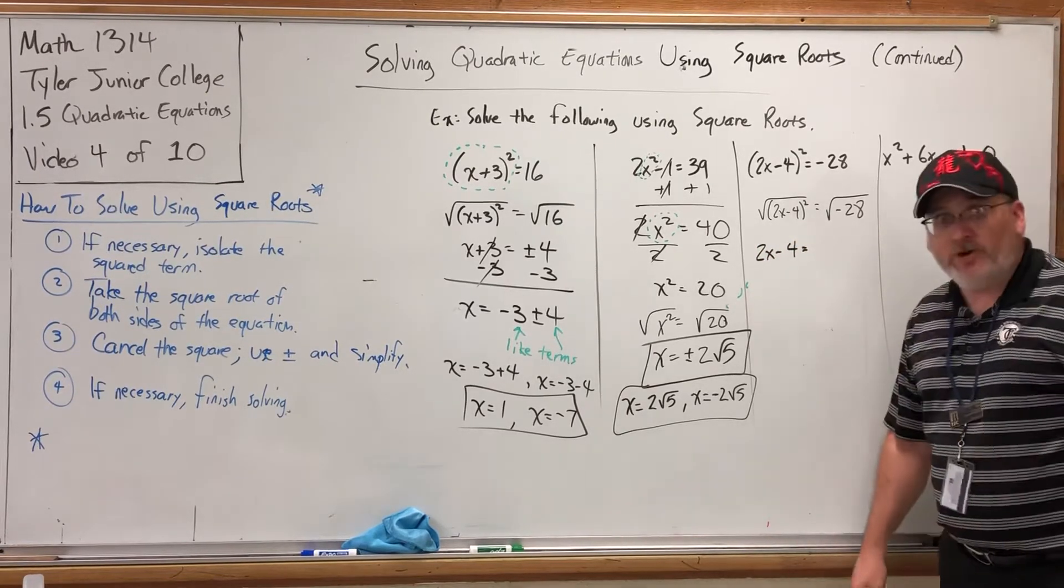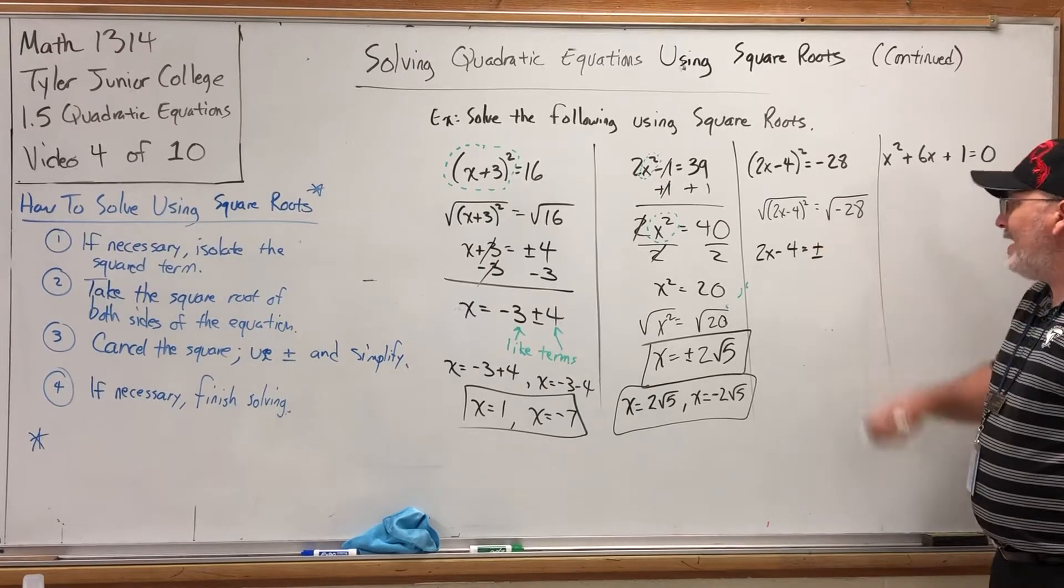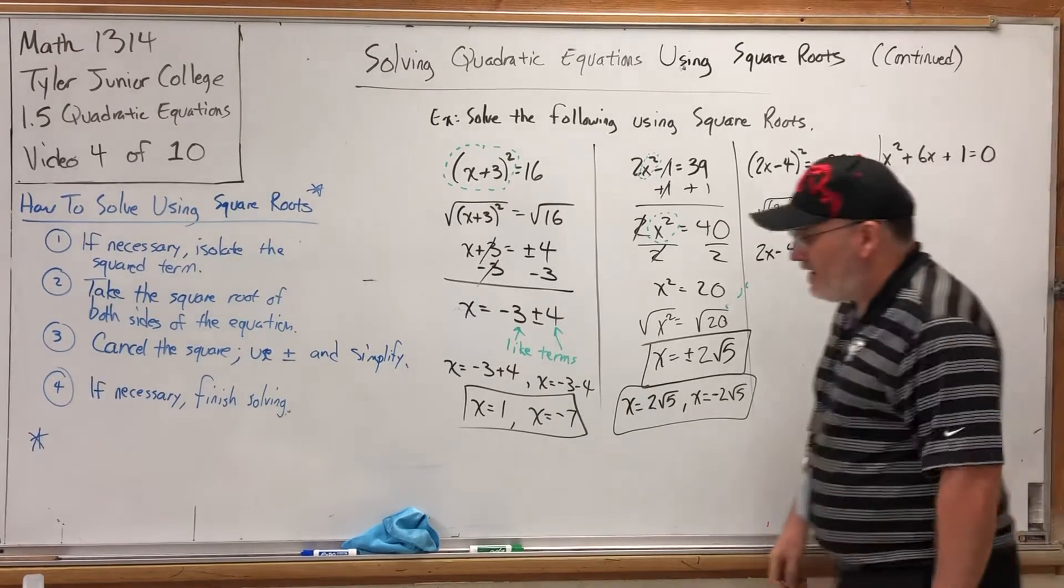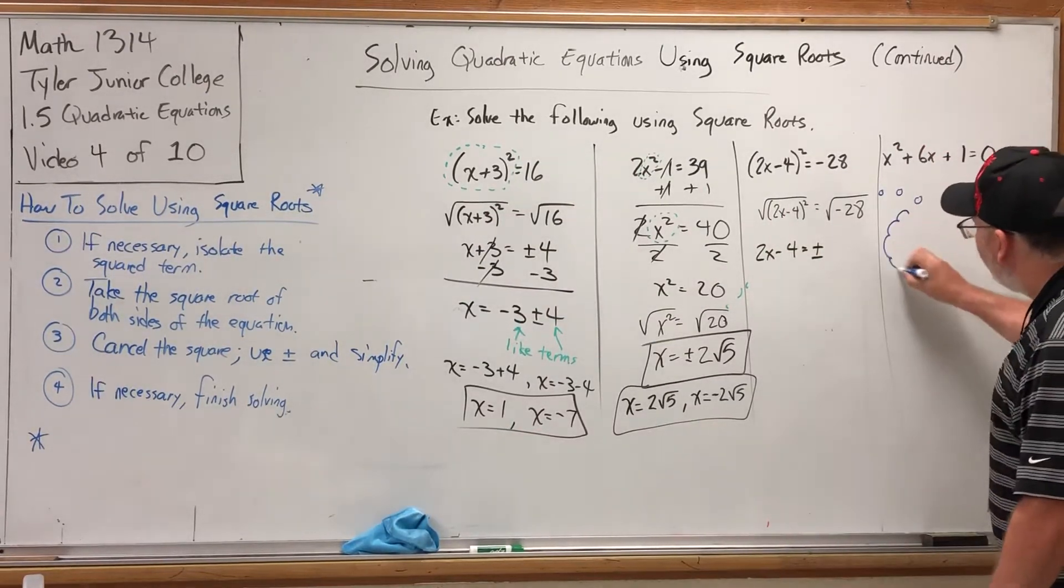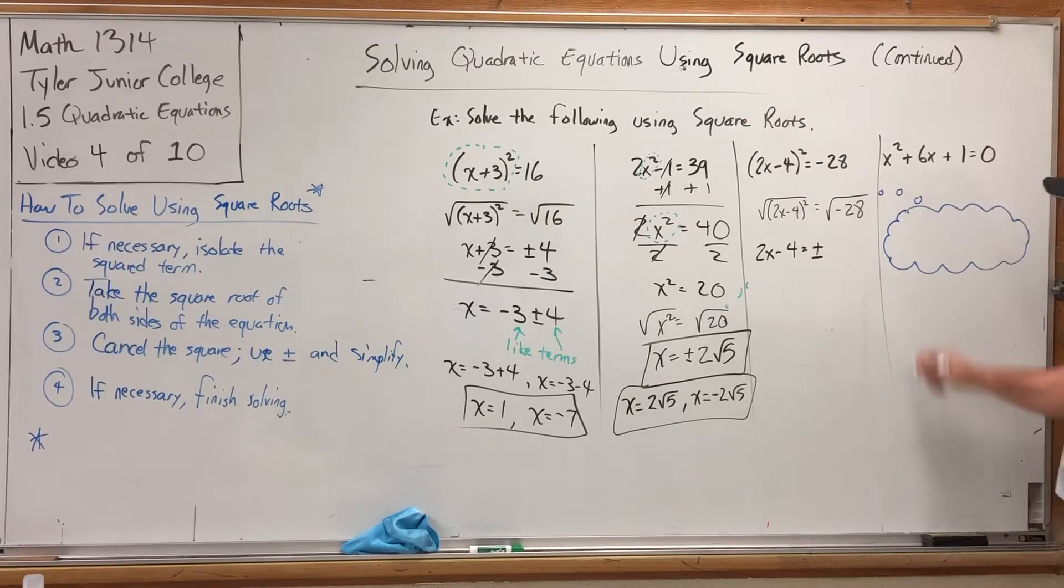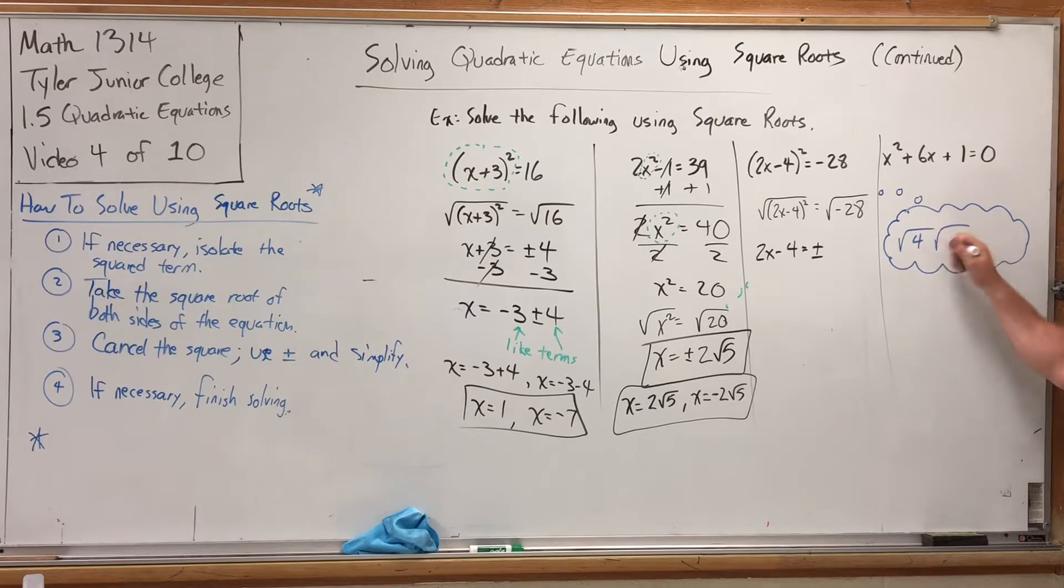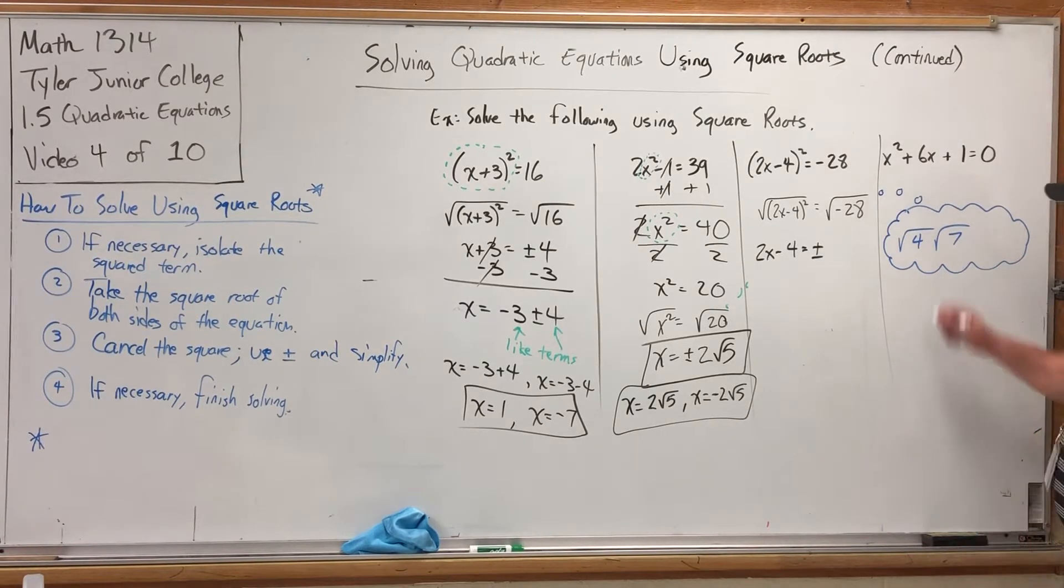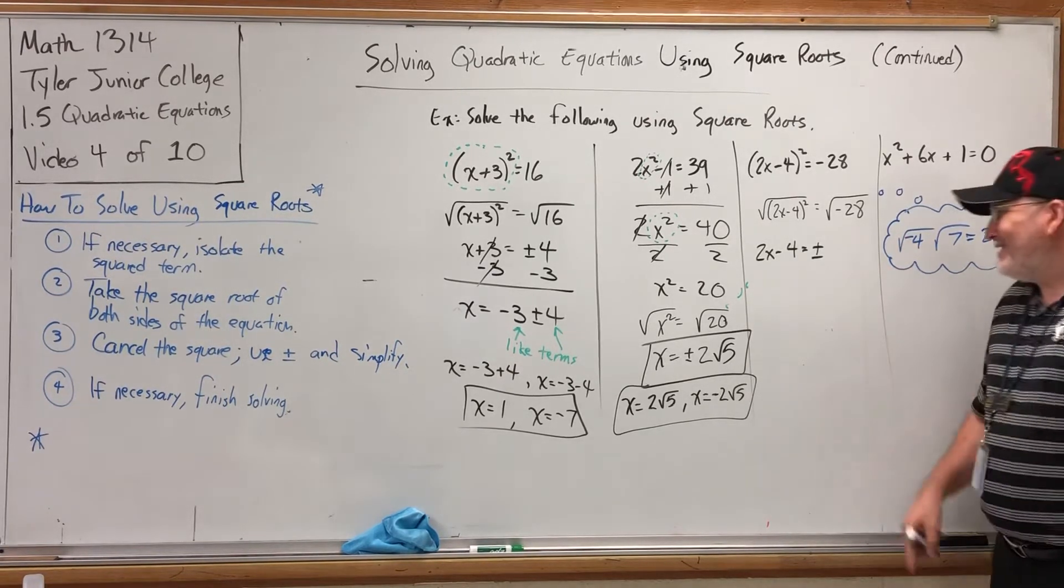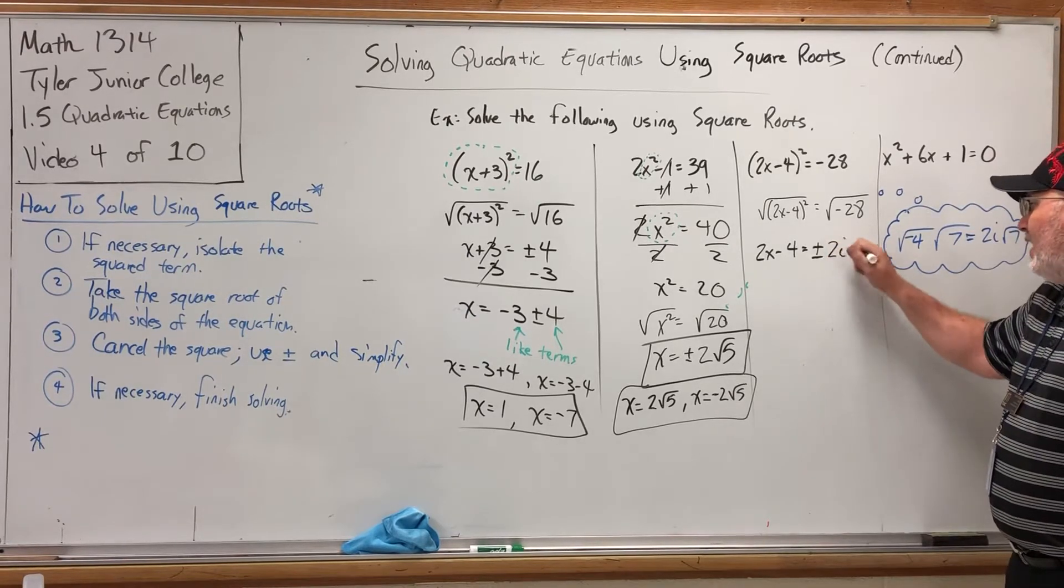The square cancels, leaving us 2x - 4. That was the whole purpose for square rooting both sides. On the right side, we'll get a plus-minus. But what's going to happen with the square root of negative 28? I can split 28 into 4 times 7, and I know the square root of 4. But it was a negative 28. And do you remember who gets the negative when we make the split? The number that you can square root. In this case, the 4. Because I know the square root of negative 4 is 2i, but I don't know the square root of 7. So I get 2i times the square root of 7.